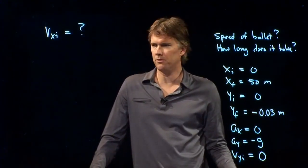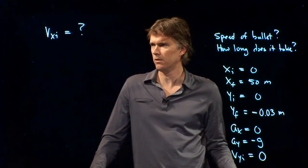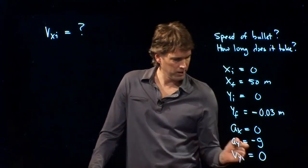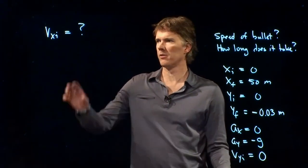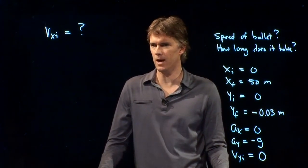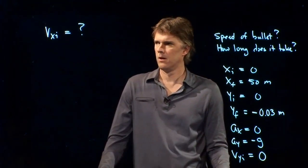So we want to figure out what the speed of the bullet is, and we said that it's fired horizontally, so v_y initial is zero, and so really all we're looking for is v_x initial.